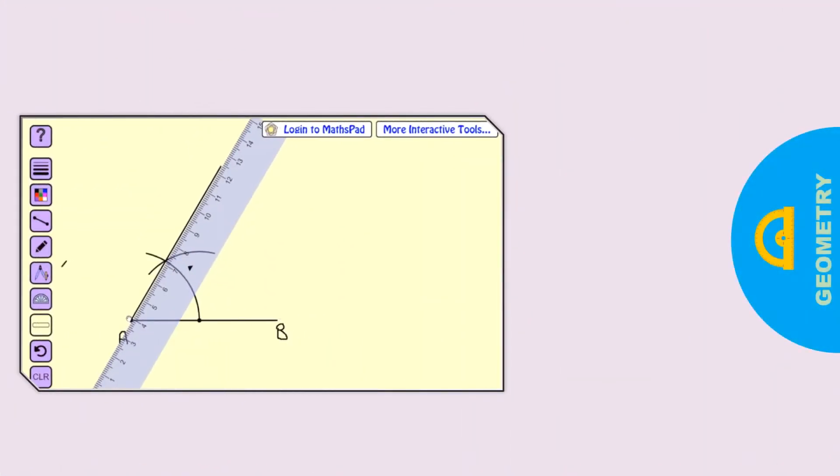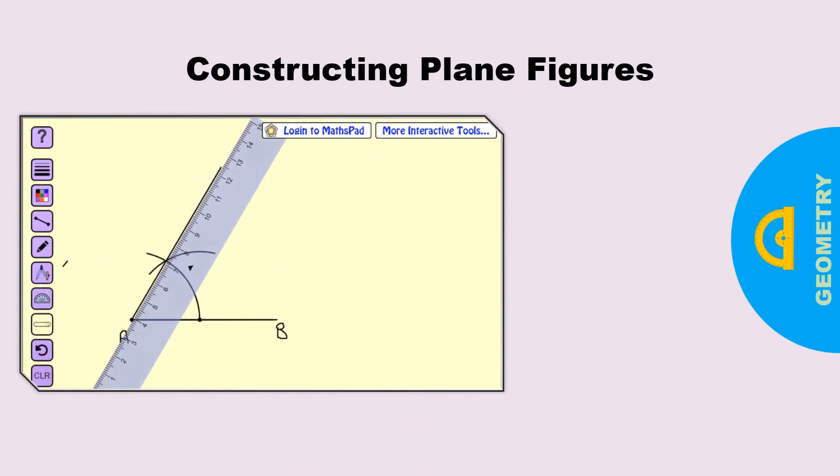Now let's look at how we can construct using the same principles. Now remember, a plane figure is a two-dimensional object. Plane figures can be triangles, rectangles, circles, and squares.